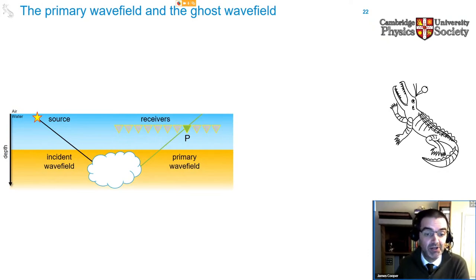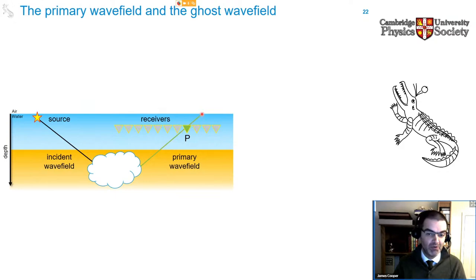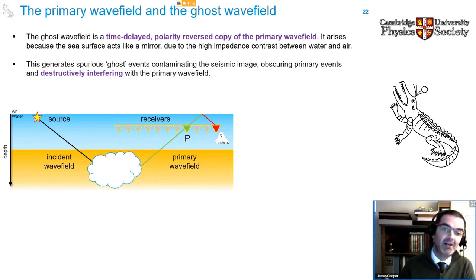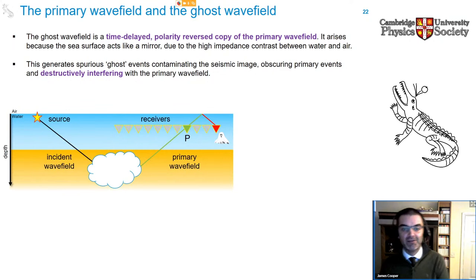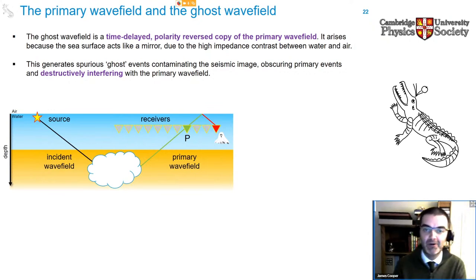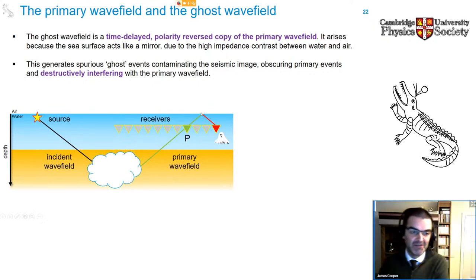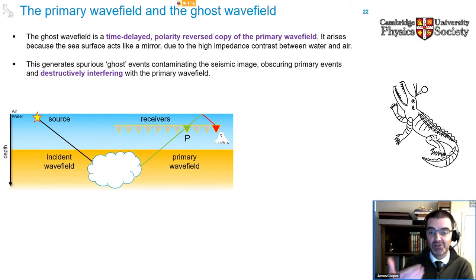But we also record a lot of data that we don't want. The primary wave field, as it reaches the receiver and continues upward towards the sea surface, will reflect again — because the sea surface acts like a mirror — and come down again, producing a duplicate recording at the receiver. This is what we call the receiver ghost. The ghost wave field is a time-delayed, polarity-reversed copy of the primary wave field, that polarity reversal being due to the high impedance contrast at the surface. The ghost is spurious: it doesn't tell us about the subsurface; it only tells us about the reflecting properties of the sea surface. It also contaminates the seismic image by obscuring the primary events we're interested in.